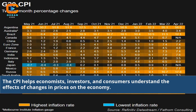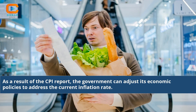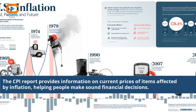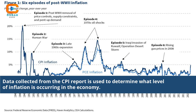The CPI helps economists, investors, and consumers understand the effects of changes in prices on the economy. It indicates the stability of the economy and signals whether it is heading in the right or wrong direction. As a result of the CPI report, the government can adjust its economic policies to address the current inflation rate. The CPI report provides information on current prices of items affected by inflation, helping people make sound financial decisions. By utilizing the CPI report, economists can make predictions of future inflation trends and devise strategies to address inflation. Data collected from the CPI report is used to determine what level of inflation is occurring in the economy.